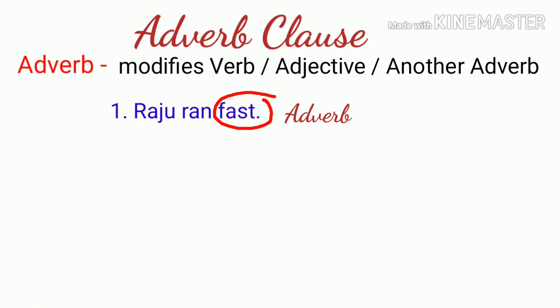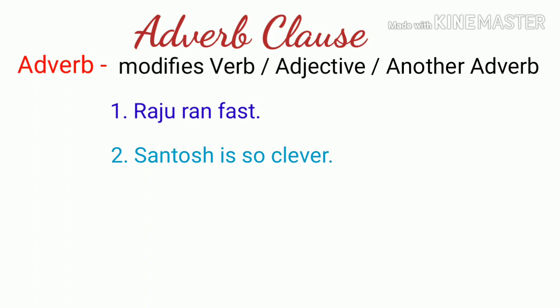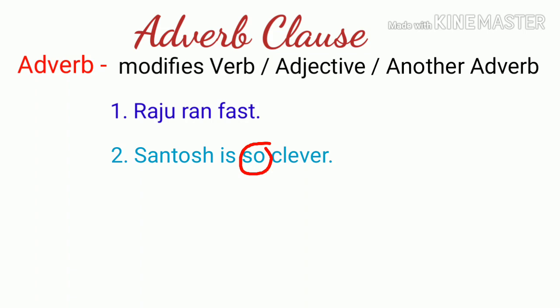In that sentence the adverb gave information about the verb. Now let's look at another example where information is given about an adjective. For example, 'Santosh is so clever' - here 'so' gives information about the adjective 'clever,' so 'so' is an adverb.